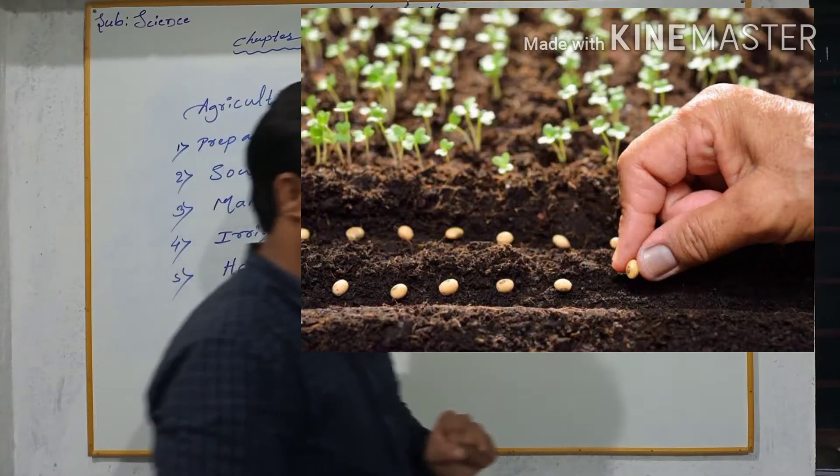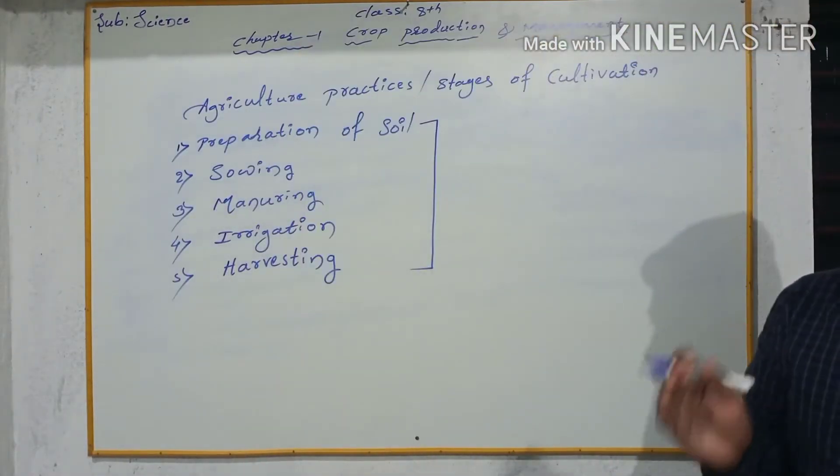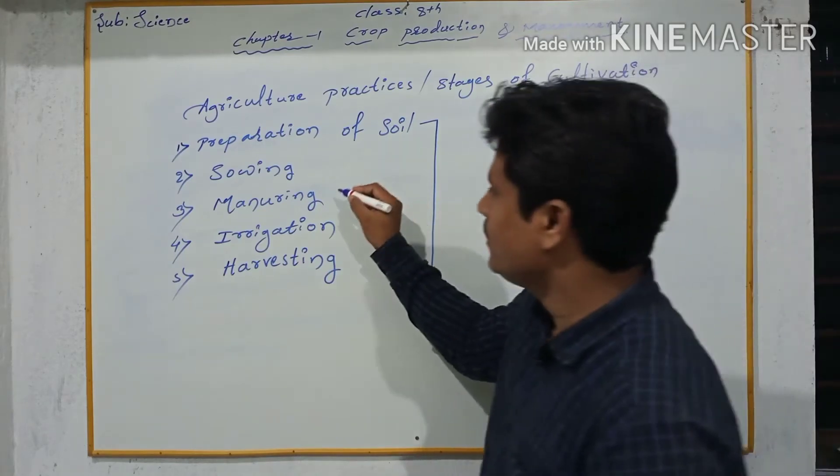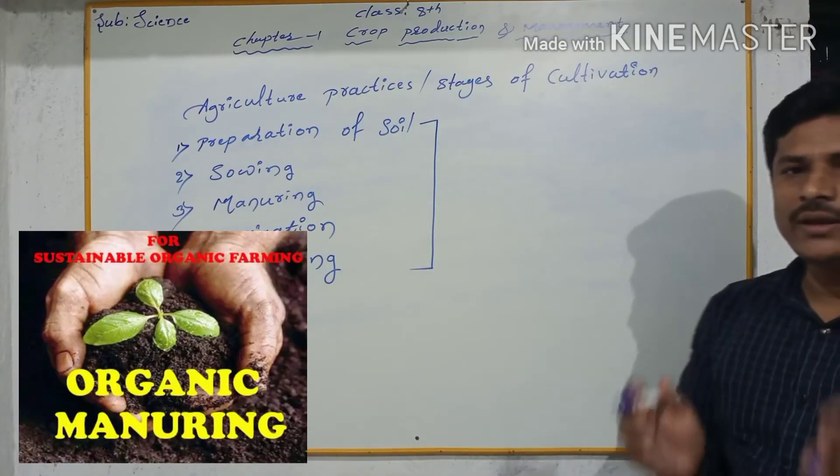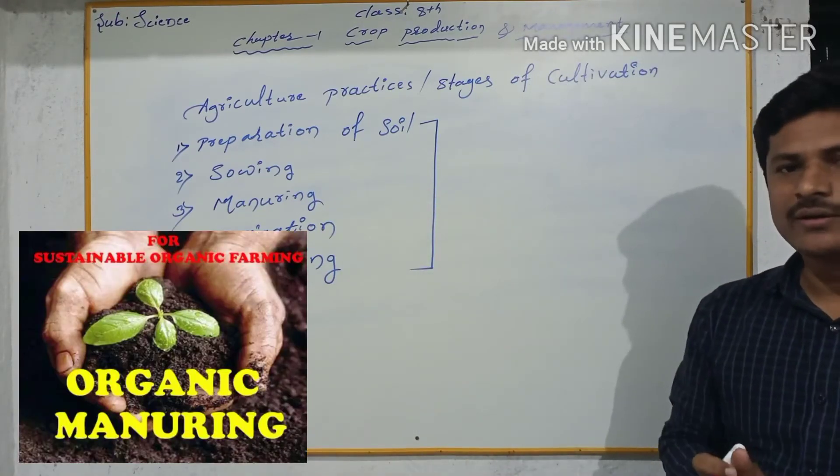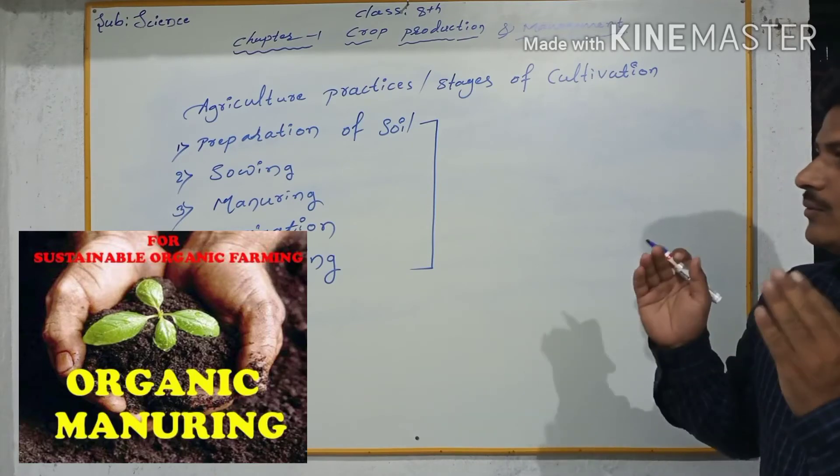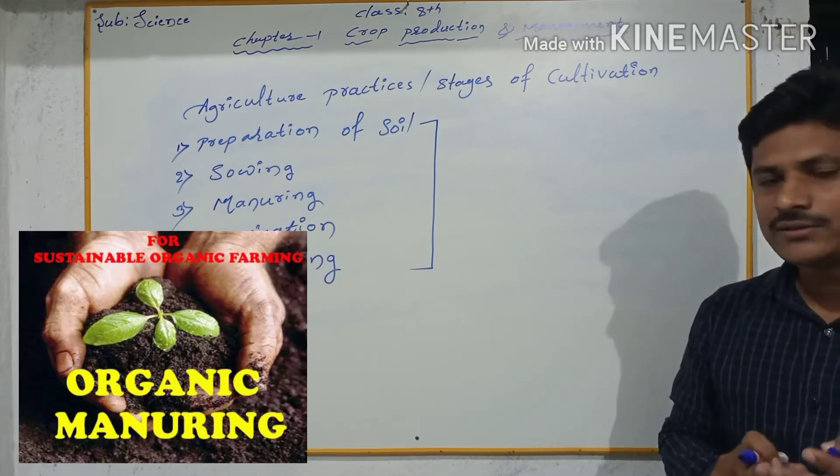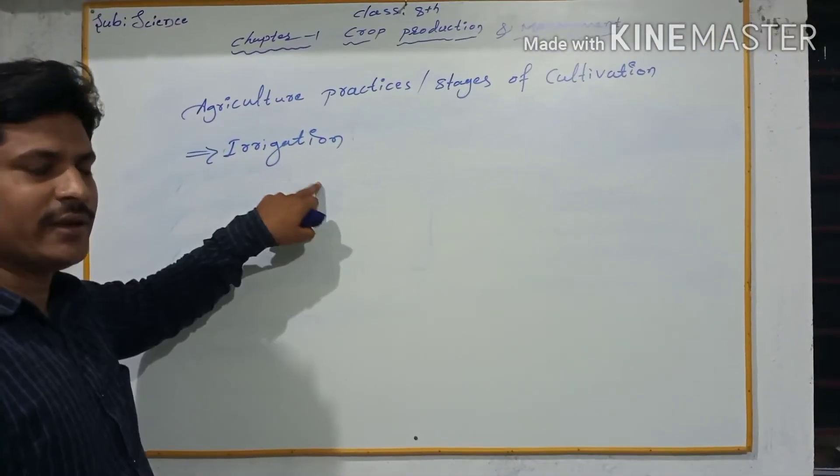So in this stage, the seeds are sown in the field. And third one, manuring. So soil needs good nutrients or rich nutrients. That's why we should use some fertilizers or manure.